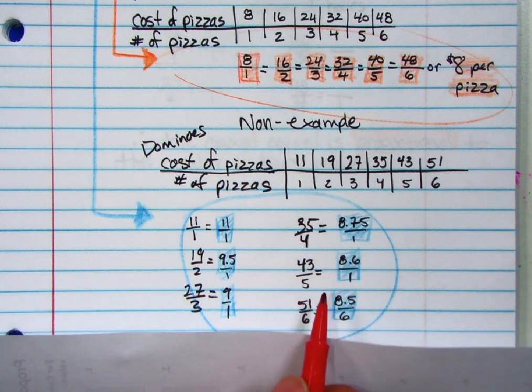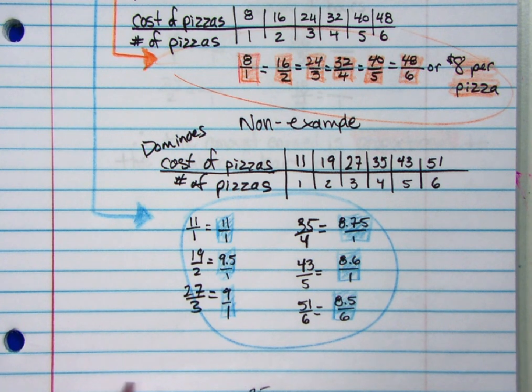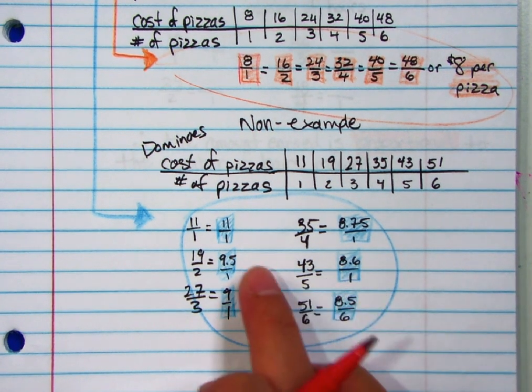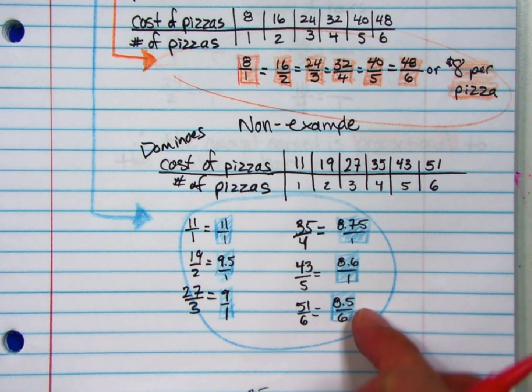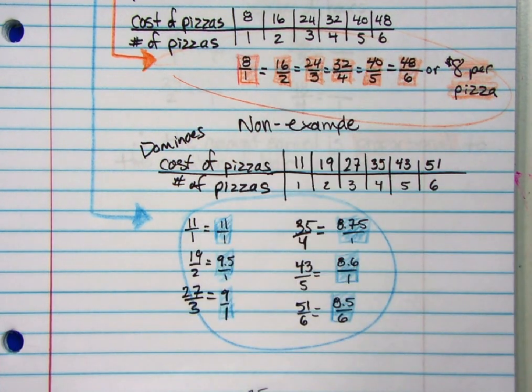Notice that each one of these numbers is different. So therefore, these are considered non-proportional because they don't have the same unit rate versus over here, this is proportional because it does.